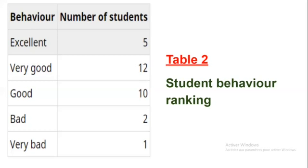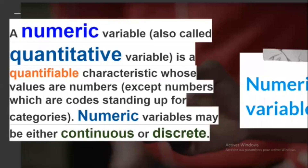A numeric variable, also called a quantitative variable, is a quantifiable characteristic whose values are numbers, except numbers which are codes standing for categories. Numeric variables may be either continuous or discrete.